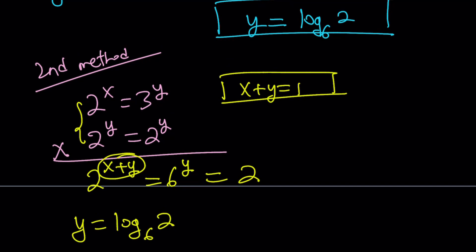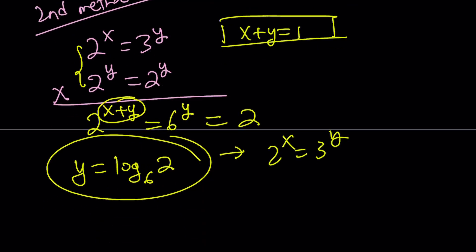And from here, y is going to be log 2 with base 6 as before. But this time we found the y value first. We can plug it in and find the x value the same way. So to find the x value, you can use x plus y equals 1, or you can use 2 to the x equals 3 to the y. You can write it as 2 to the x equals 3 to the power log 2 base 6. And now from here to find x value, you can log both sides.